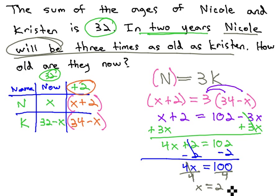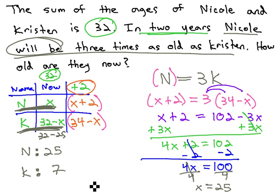x, we find out, is 25. Looking at our table, we see x represents Nicole's age. Nicole is 25. Kristen's age, we see, is 32 minus x. 32 minus 25 is 7.